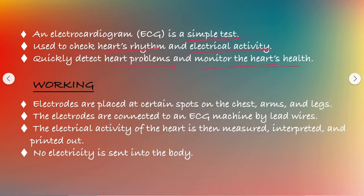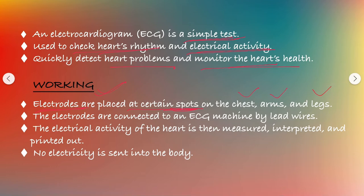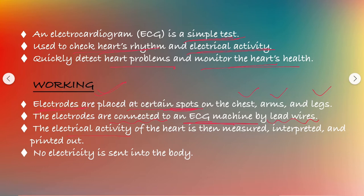Now let's discuss the working of the electrocardiogram. Basically, electrodes are placed on certain spots like the chest, arms, and legs. These electrodes are connected to an ECG machine using lead wires. The electrical activity of the heart is then measured, interpreted, and printed out.